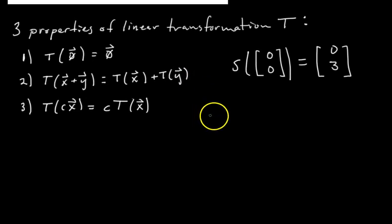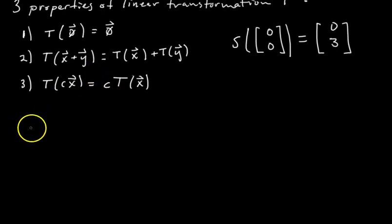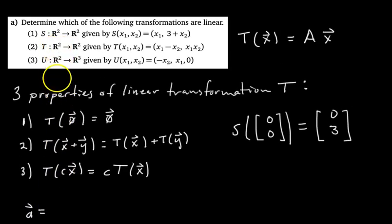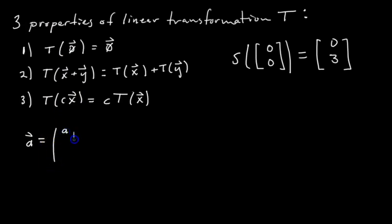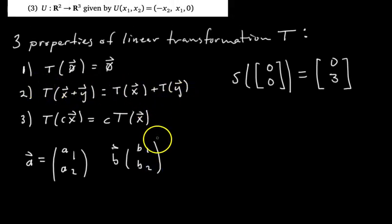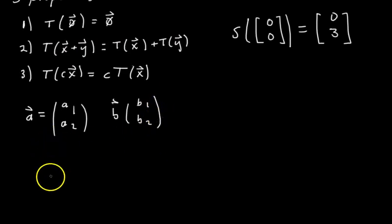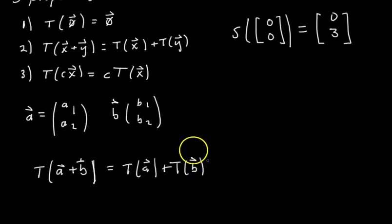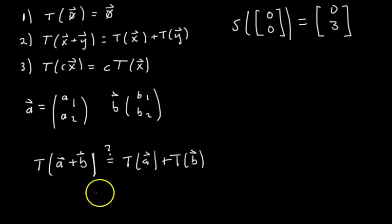Let's check the second condition: T(A + B) has to equal T(A) + T(B). To do this, let's define some vectors. Let vector A have components A1, A2, and a different vector B have components B1, B2. We're keeping this general so we can check whether the property holds for all cases. We're going to compute both sides separately and then see if they're equal.